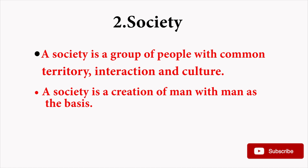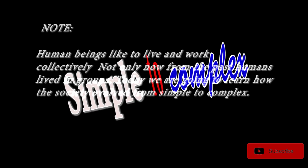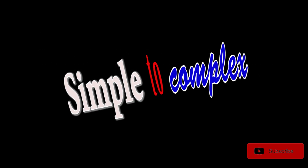A society is a creation of man, with man as the basis. Human beings like to live and work collectively. Not only now, but from the past, humans lived in groups. Today we are going to learn how the society evolved from simple to complex, in each and every period from the hunting era to the present — people used to live collectively.